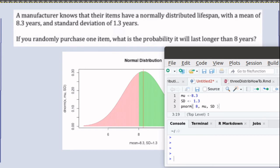So if we asked R to find pnorm of 8 with this particular mean and that standard deviation, it would be finding the pink area. We need the green area. We know the total area under the curve is 1, so we can find our green area by taking 1 minus that pink area.